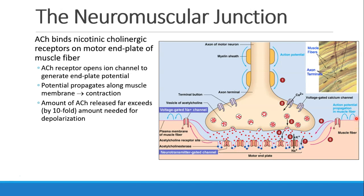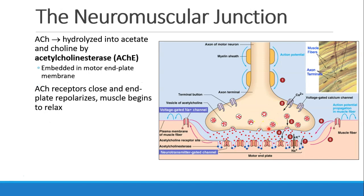The amount of acetylcholine that's released is much more — at least tenfold more — than the amount needed for depolarization. This gives us a buffer so that we have adequate strength even if there is a depletion of acetylcholine. The acetylcholine is then hydrolyzed by acetylcholinesterase, which is embedded in the motor end plate membrane.